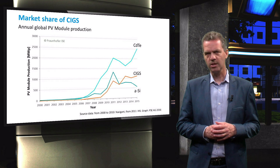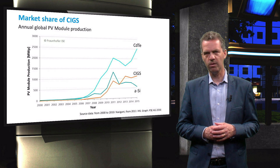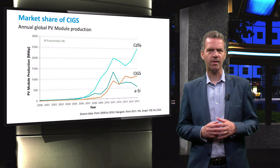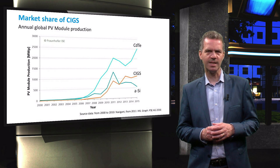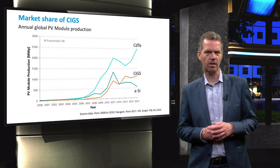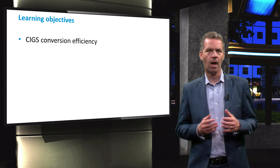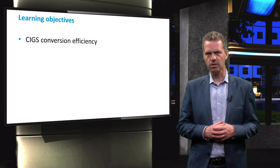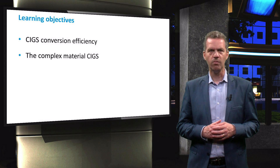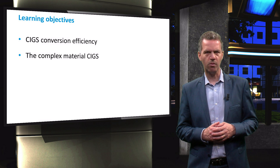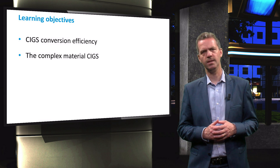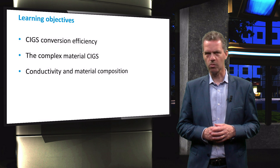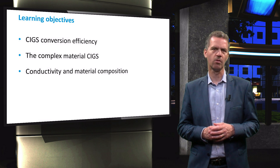The graph in this slide shows the annual global PV module production of the three most important thin film technologies, and we can see that the capacity for CIGS has not been growing strongly over the last number of years. In this video, we will show the progression and conversion efficiency of CIGS. You will learn about the most relevant properties of the complex material that CIGS is, and we will discuss the conductivity type, which can be controlled directly by the material composition.